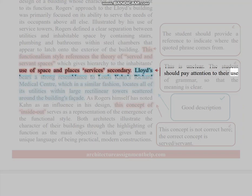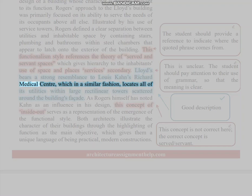This is unclear. The student should pay attention to their use of grammar so that the meaning is clear. Lloyd's bears a strong resemblance to Louis Kahn's Richard Medical Center, which, in a similar fashion, locates all of its utilities within large rectilinear towers scattered around the building's facade. As Rogers himself has noted, Kahn as an influence in his design. This concept of inside-out serves as a representation of the emergence of the functional style. Both architects illustrate the character of their buildings through the highlighting of function as the main objective, which gives them a unique language of being practical, modern constructions. Good description. This concept is not correct here; the correct concept is served/servant.